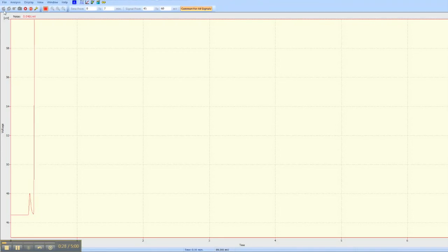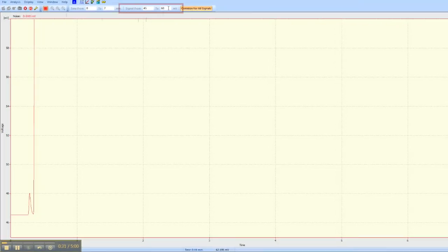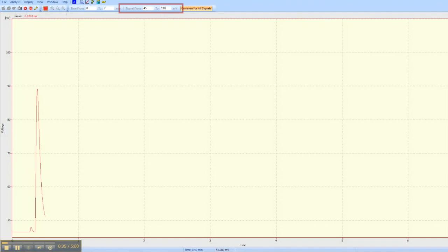If your signal goes off screen, you can adjust the Y axis with the menu on the top. Wait until the entire sample has run through the column.